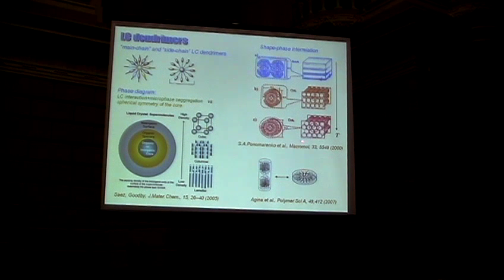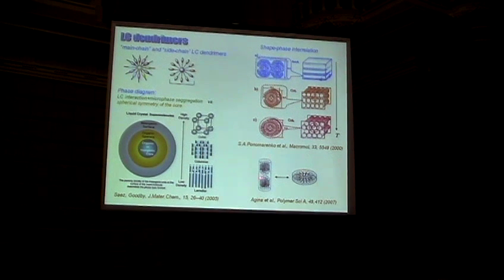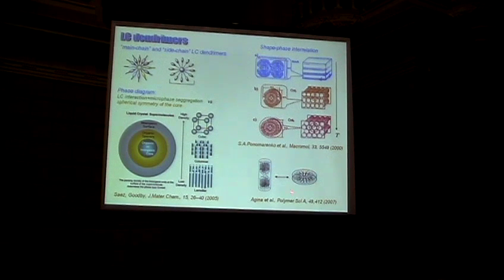This is illustrated with pictures from experimental studies. And what is important here is that these changes from the nematic phase to the columnar phase with degrees of temperature is connected with the change of the shape of the macromolecule itself.